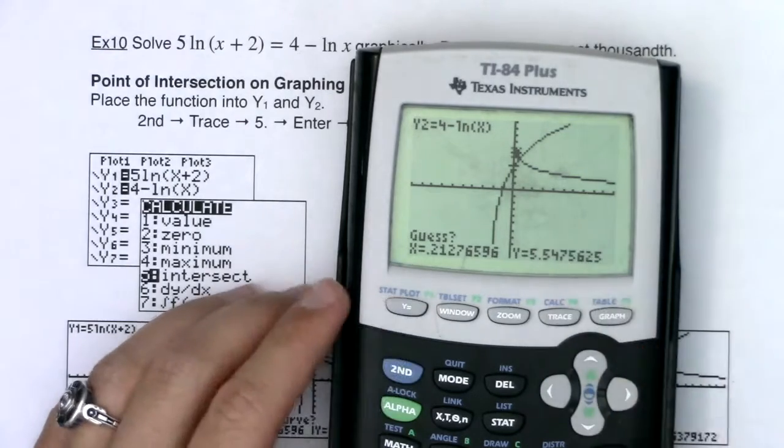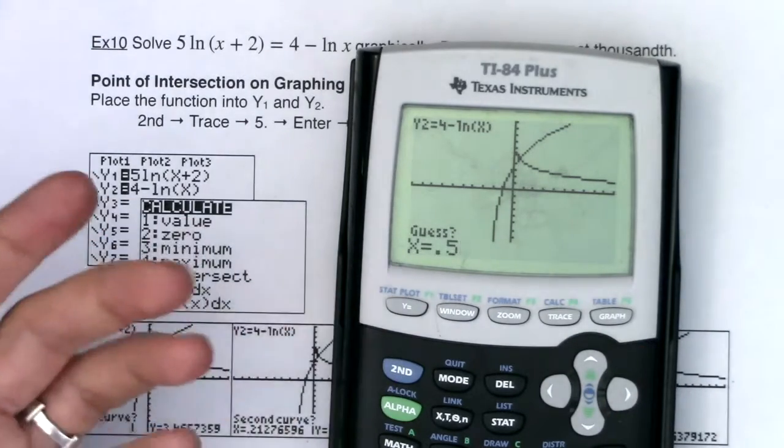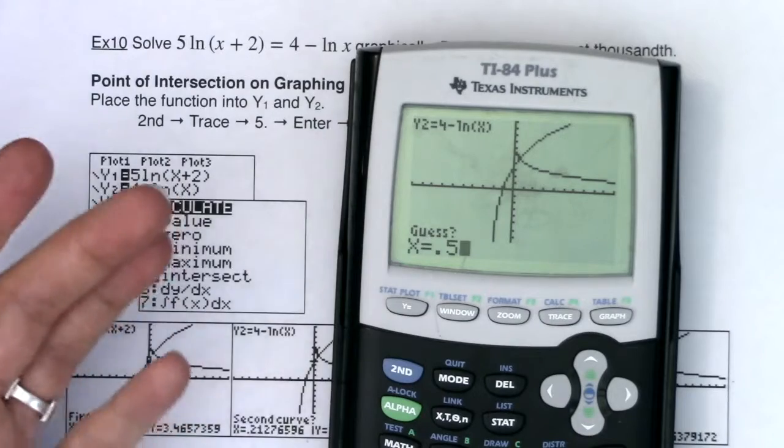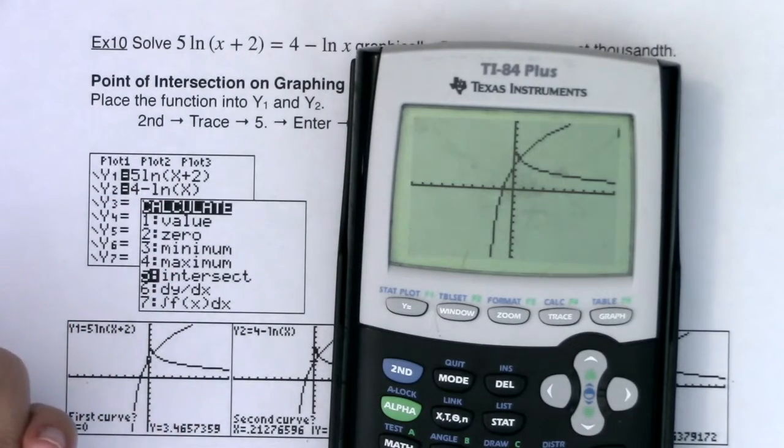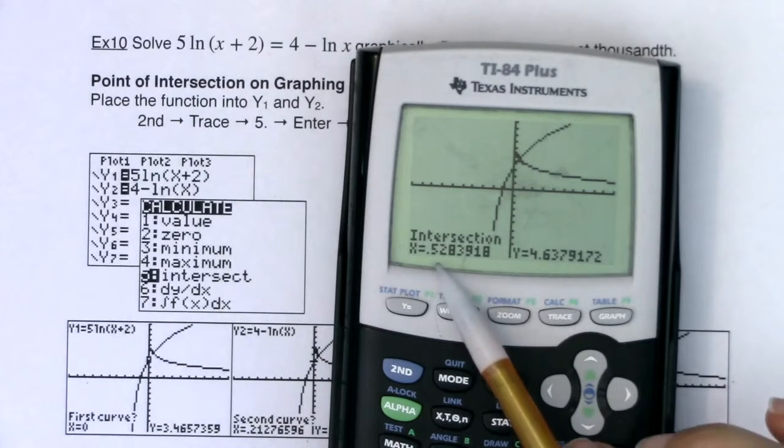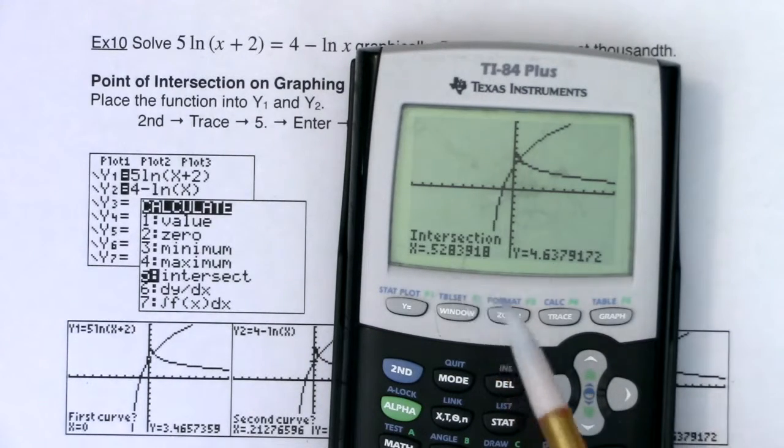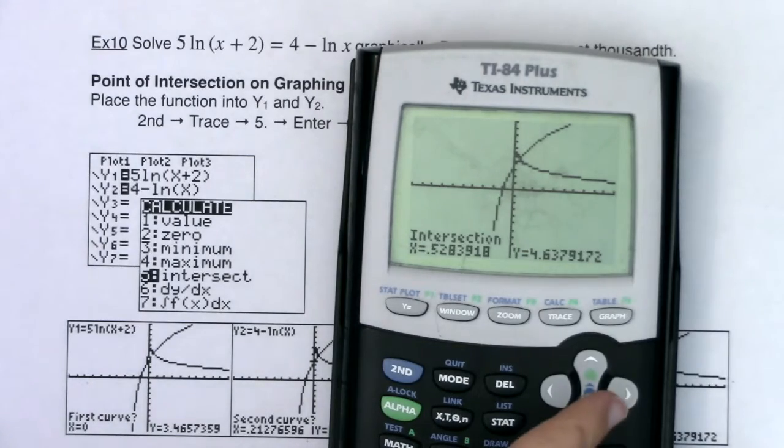I'll hit enter through there. Now I wanted to guess, you can either hit guess, or you can hit enter, or you can type in your guess. I just feel like typing in my guess today at 0.5. And when I get out of this, I wasn't too far off, right? There's my intersection at 0.5283.